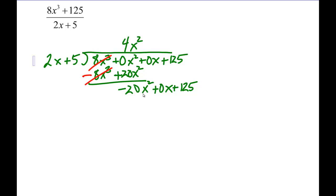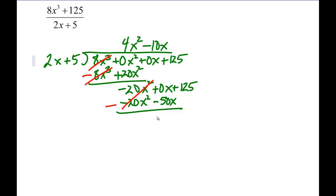Now we ask: 2x goes into negative 20x squared negative 10x times. So negative 10x times 2x gives us negative 20x squared, and negative 10x times 5 is negative 50x. We subtract again — those subtract out, and here we have 50x. Remember this becomes positive 50 because the negative sign changes when we do the subtraction. Then we bring down the 125.